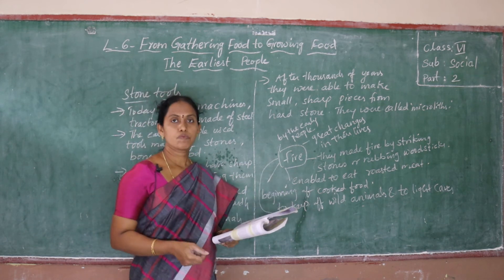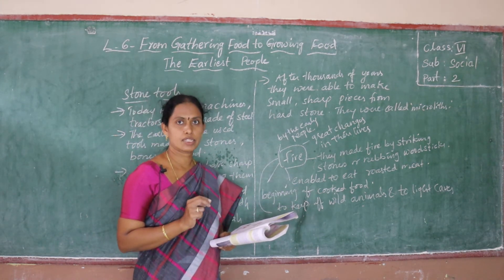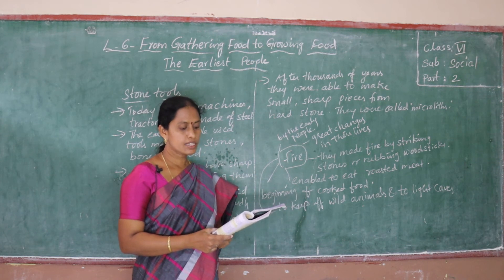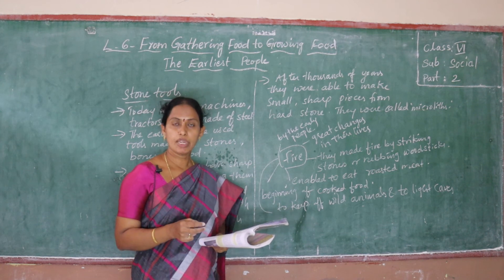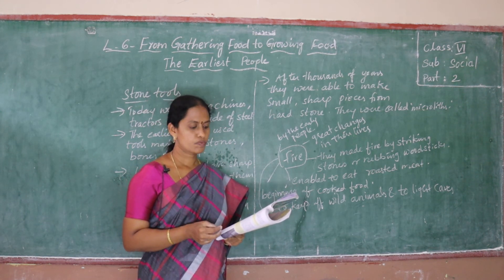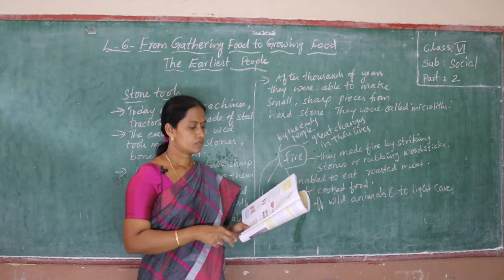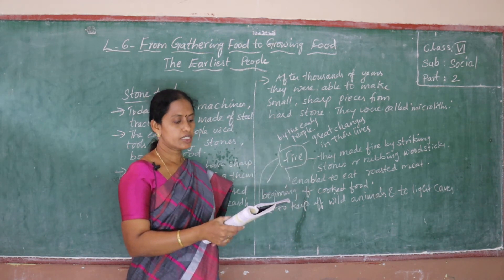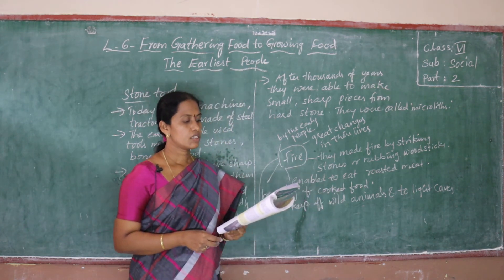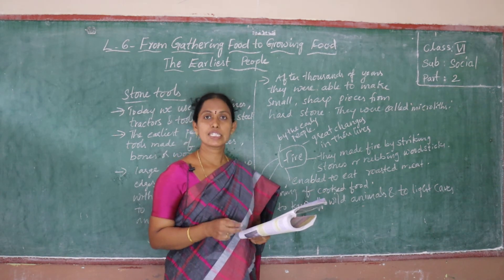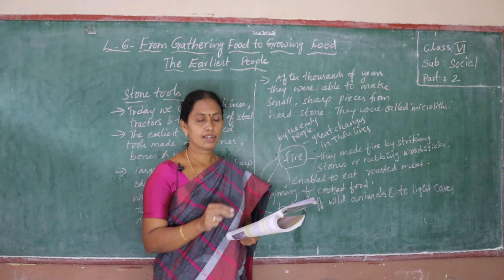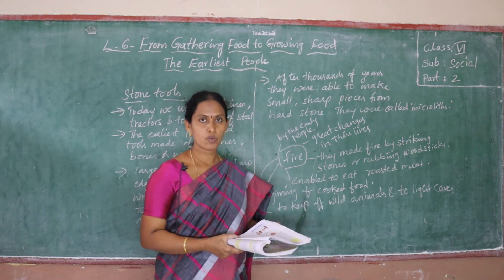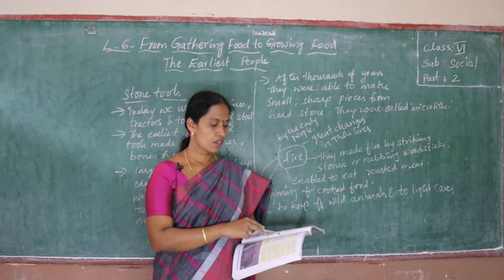These stone weapons were used to dig soil, chop tree bark, remove the skin of animals, clean the skin, make clothes from the skin, cut meat and bones, chop fruit and roots, and hunt animals. By using these stones they did all these activities.